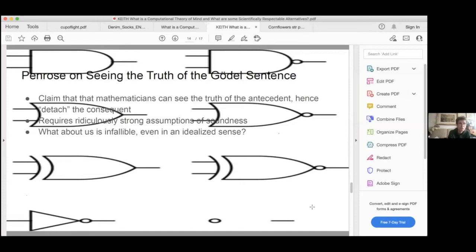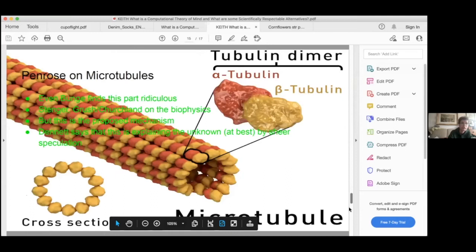That's assumed that we can see the truth that the system is consistent, and then hence detach the consequent by a basic logical inference. This requires the entire mathematical community to be, in some sense, mathematically sound. There's no possibility of error, because otherwise we are inconsistent. And then hence we cannot detach the consequence, see the Gödel sentence. That seems unlikely, to say the least. How does this work even? What's the mechanism by which we are non-computable? Penrose goes on to try to explain it.